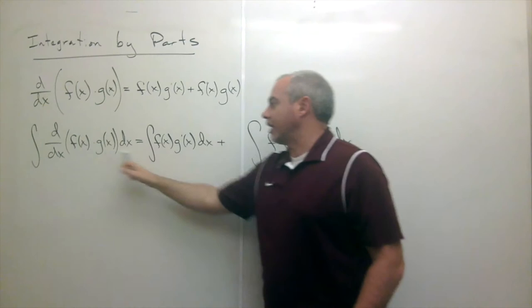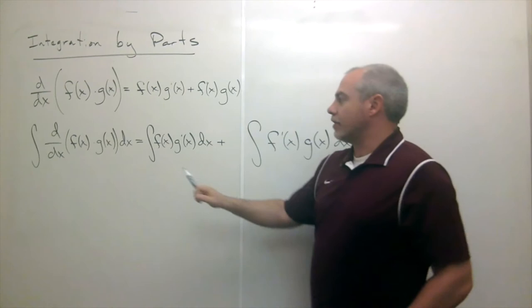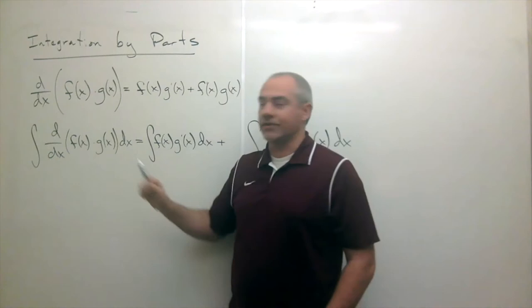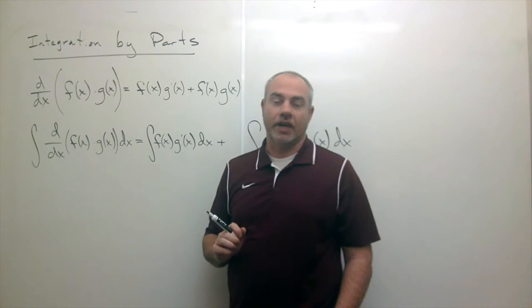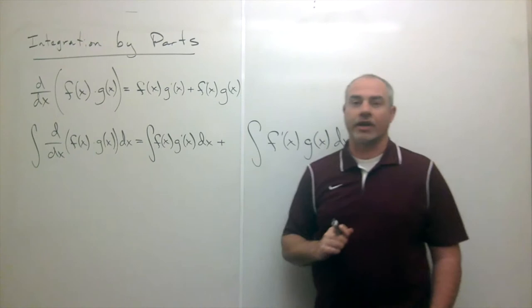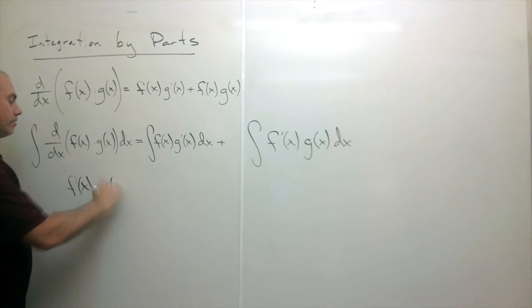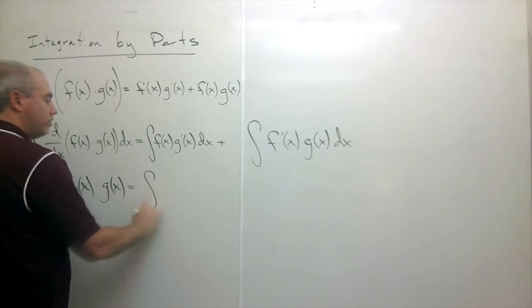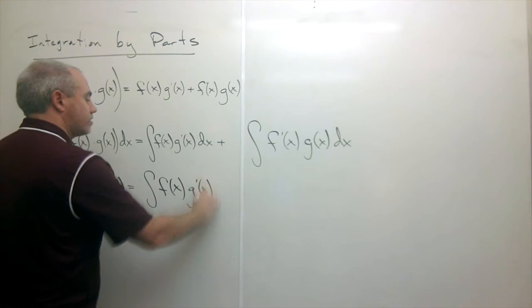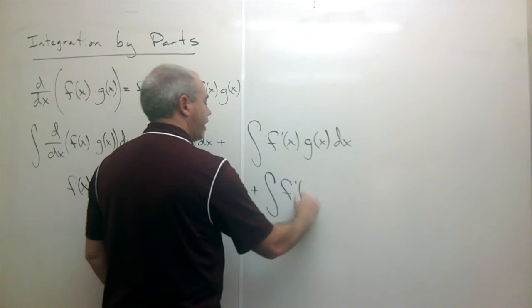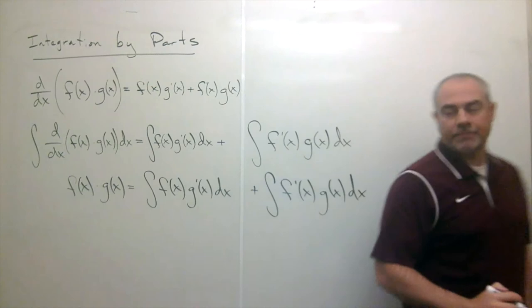Notice that if I take the derivative of a function and then take the antiderivative of that function, I just get the original function back — possibly plus a constant. Since there are many antiderivatives here, we only need one constant. So the left side simplifies to f(x) times g(x), and the right side remains the integral of f(x) times g'(x) dx plus the integral of f'(x) times g(x) dx.